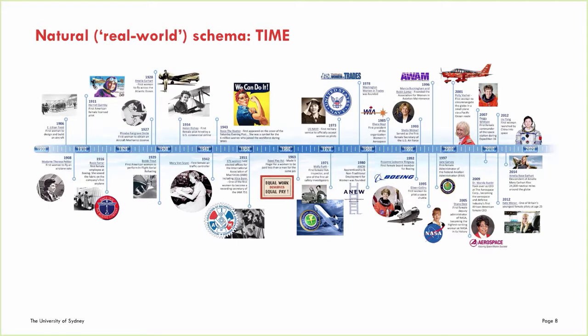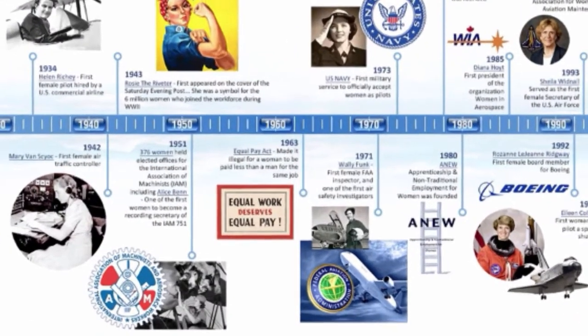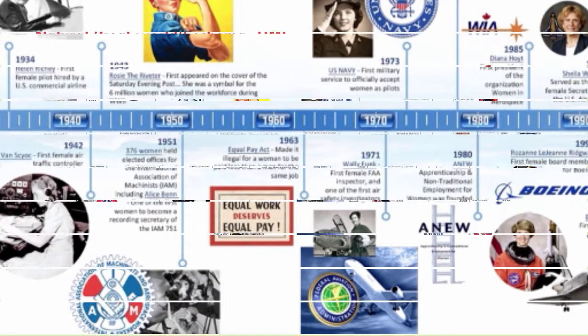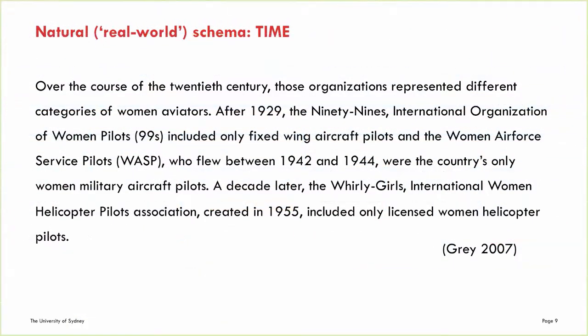Another important natural schema — time — gives a chronological overview of events or the development of ideas. This picture shows a timeline of women in aviation. If an author was interested in writing about events over time, their diagram might look like a simplified version of this one. This excerpt is from the same thesis as the last text. In this section, the writer is drawing our attention to the development of organizations for women pilots throughout the 20th century.